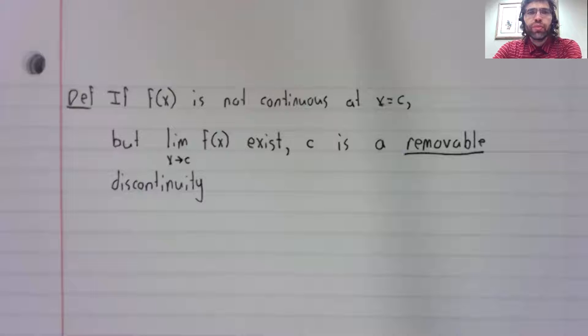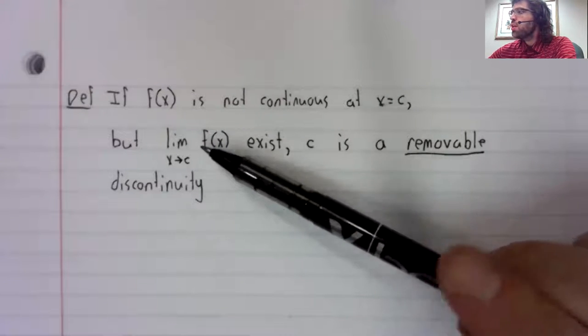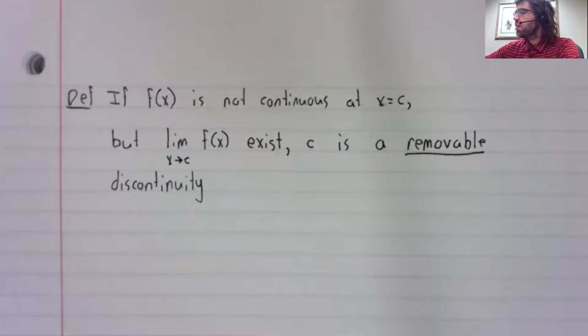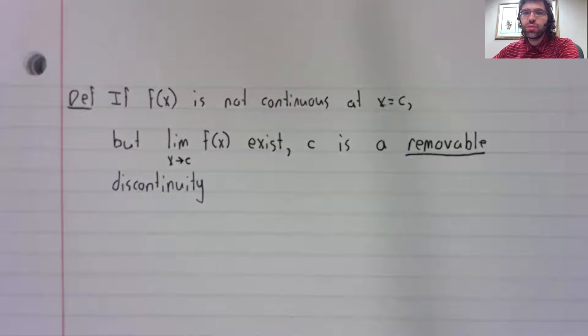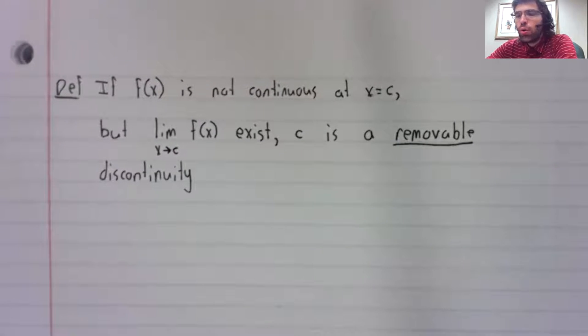Definition: Suppose a function is not continuous at c, but the limit as x approaches c does exist. Then the discontinuity at c is called removable.